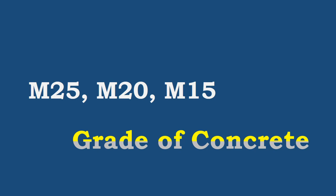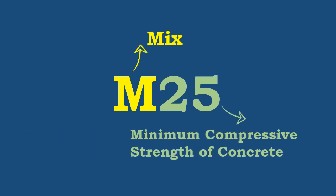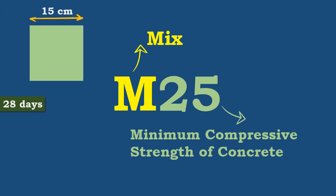The grade of concrete is represented by prefixing M followed by a number, where M stands for mix and the number denotes the minimum compressive strength of concrete of 15 cm cube at 28 days, expressed in Newton per millimeter square.